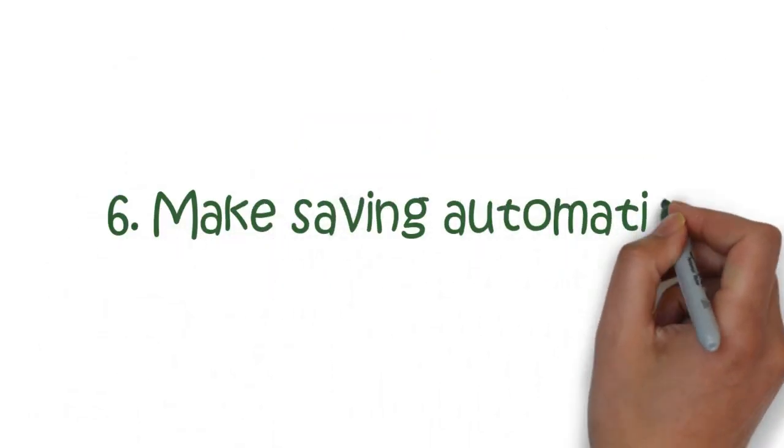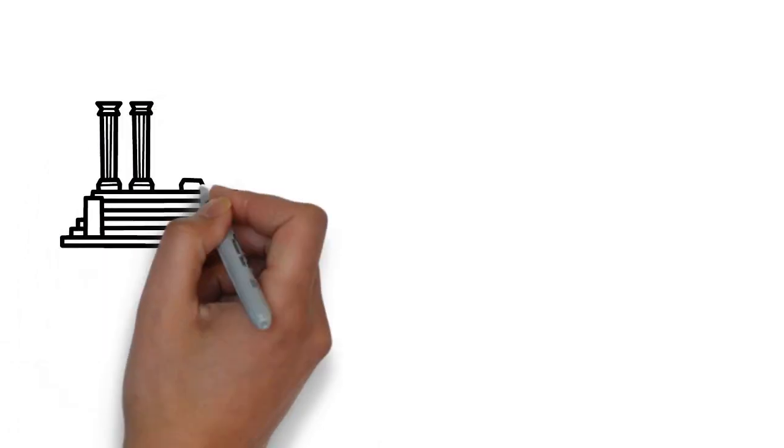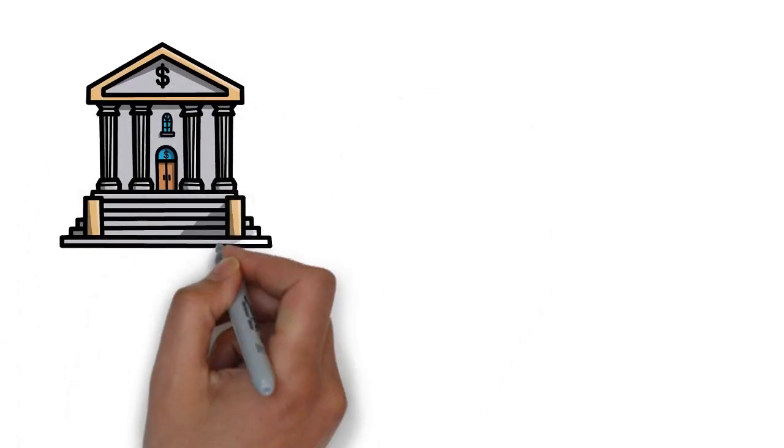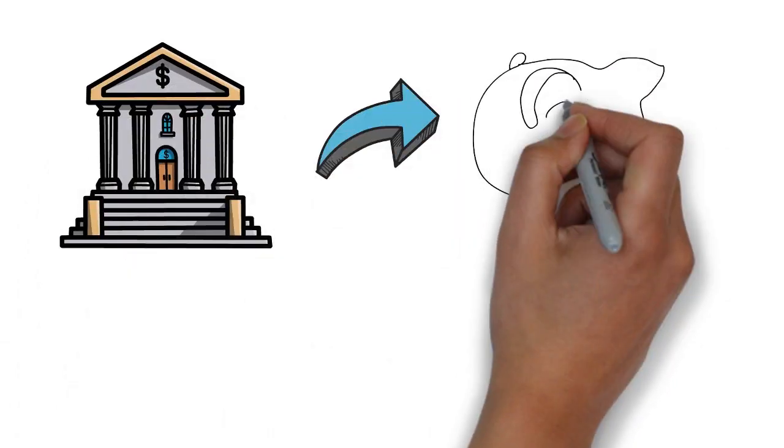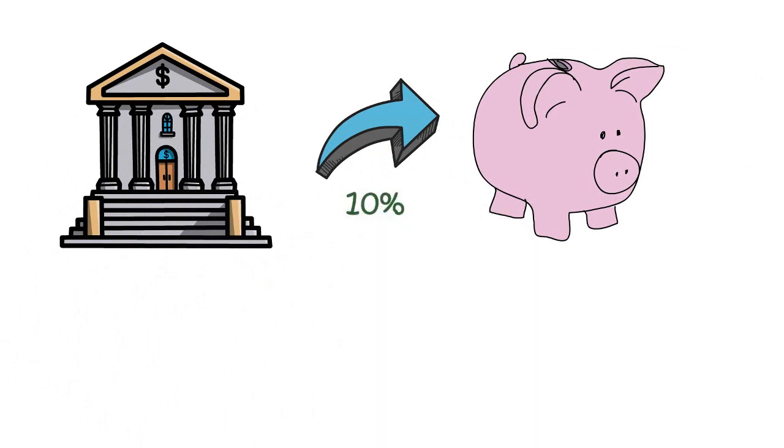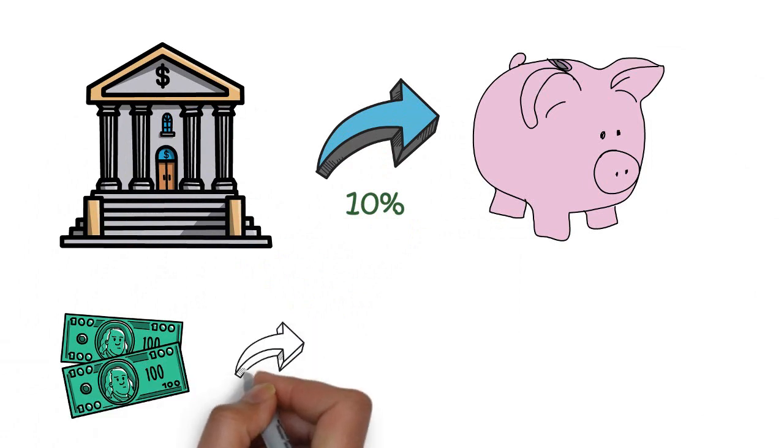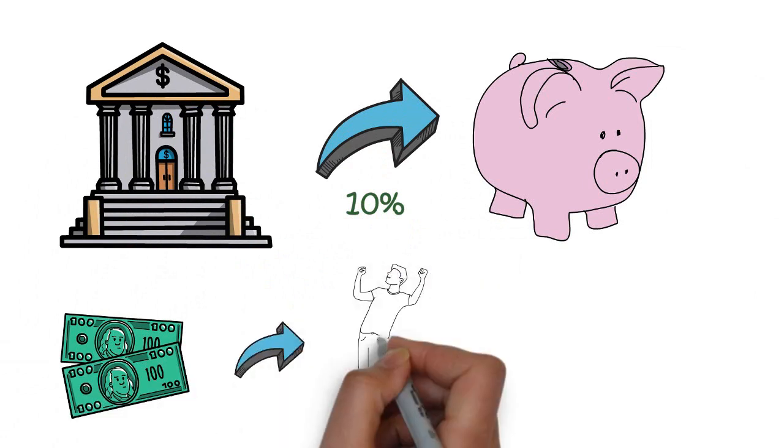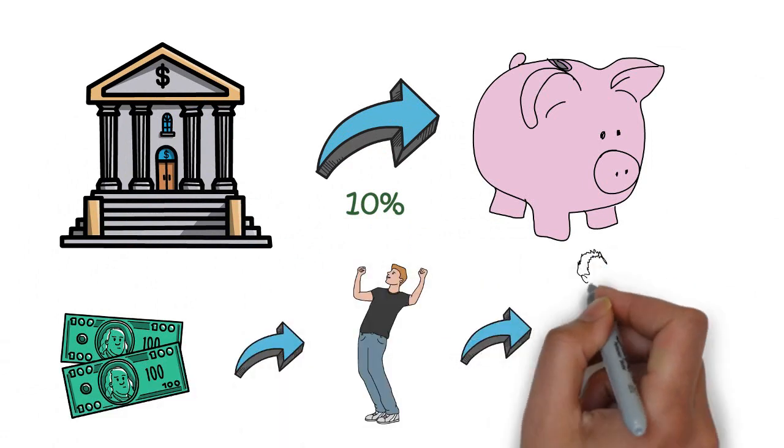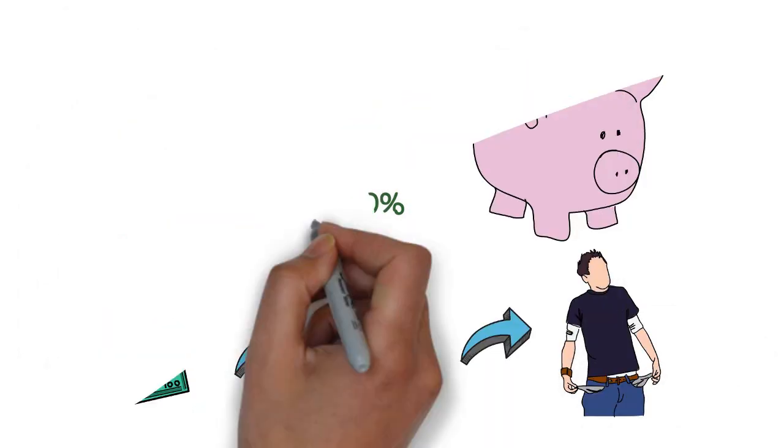Number 6. Make saving automatic. These days it's easy to automatically save from your bank account. For example, every time I get paid, 10% automatically goes to my savings. We humans tend to use every cent we can before we get another paycheck, so by saving immediately after getting paid, you won't waste that money on a cool hoverboard with 27 LED lights.